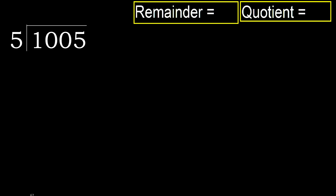1005 divided by 5. 1 is less, therefore next. 10 is not less, therefore with 10.